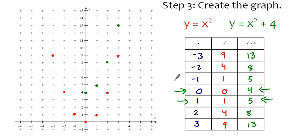On the negative side, we've got (-1, 5), which is here. (-2, 8), and (-3, 13).